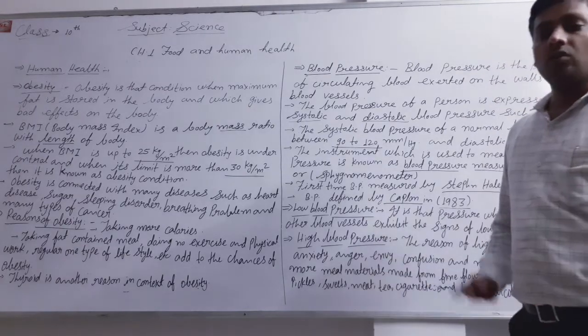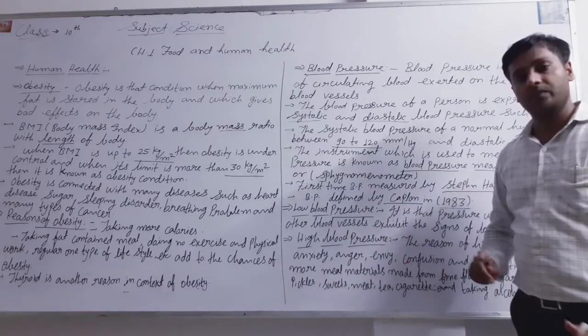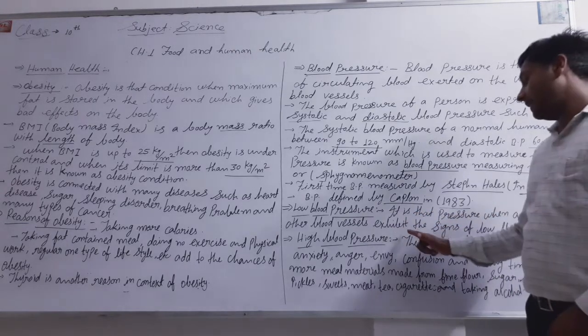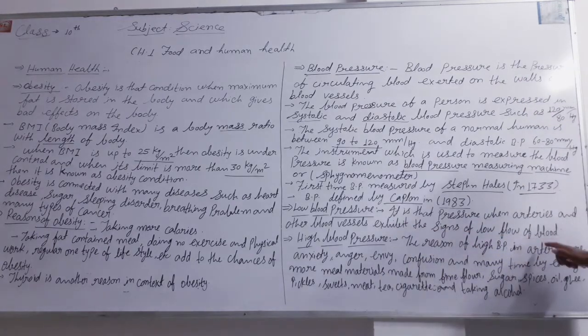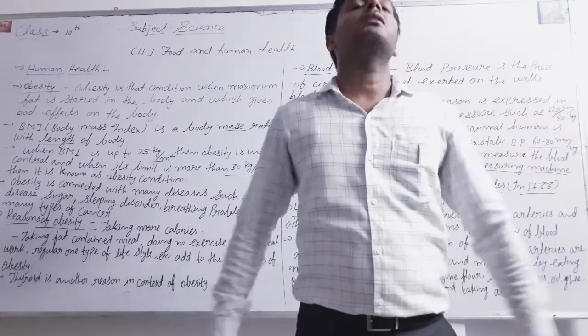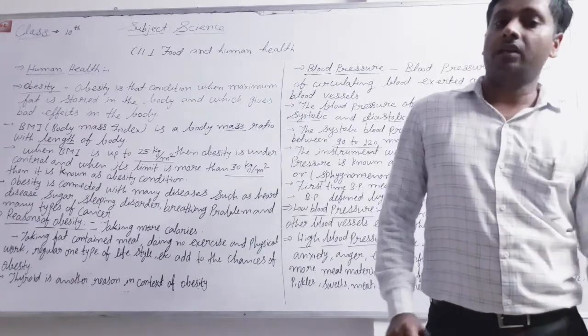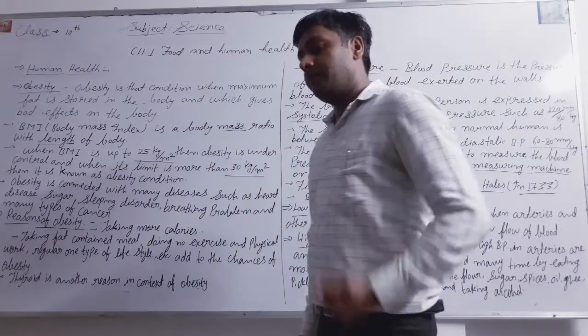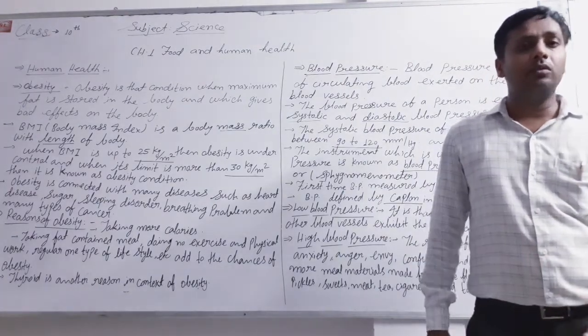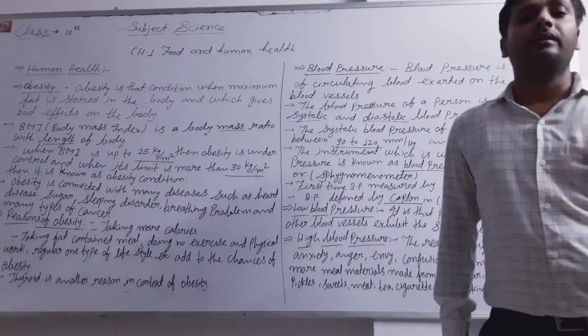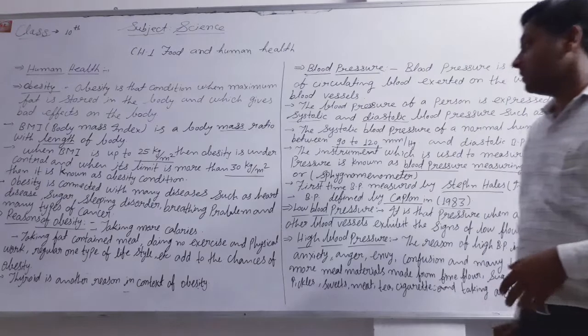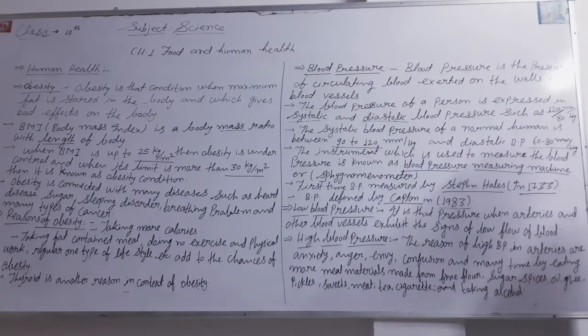Now blood pressure has two conditions: low blood pressure and high blood pressure. Low blood pressure is that condition when arteries and blood vessels show signs of low flow of blood. If blood flow is reduced, the body's supply of oxygen is not proper. Body organs like brain, liver, and kidney don't get proper oxygen supply, and they can be damaged.